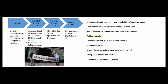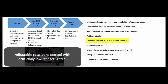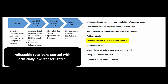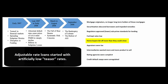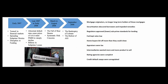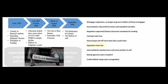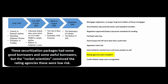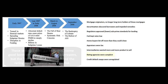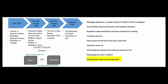As long as rates were low and people could make their payments, all was good. But people bought bigger homes than they could afford, and when adjustable rate mortgages ticked up, they couldn't make payments. Appraisers were lax and assumed home prices would keep rising. Rating agencies failed to do their job — many of these investments were below investment grade, high-risk, yet were rated as if they were above investment grade.